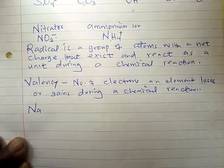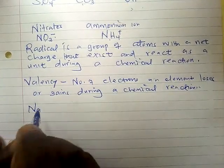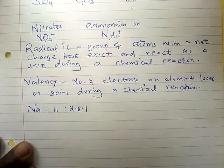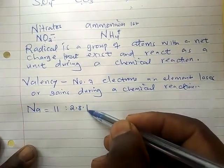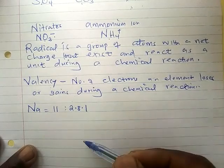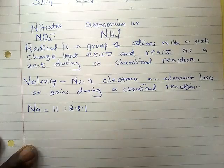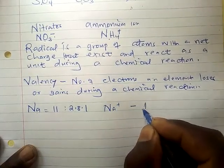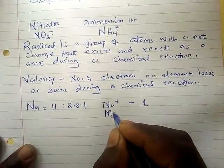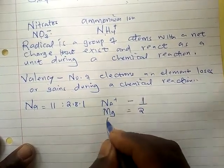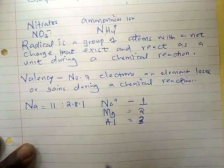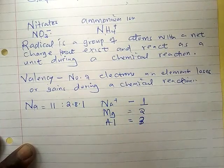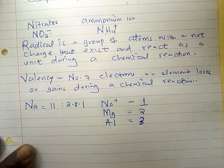Sodium has atomic number 11, so you write electron configuration 2, 8, 1. During a chemical reaction it will lose one electron — gaining seven to be stable requires a lot of energy, but losing one is very easy. Therefore the valency of sodium is one. Magnesium will lose two electrons so valency is two. Aluminium will lose three electrons so valency is three.